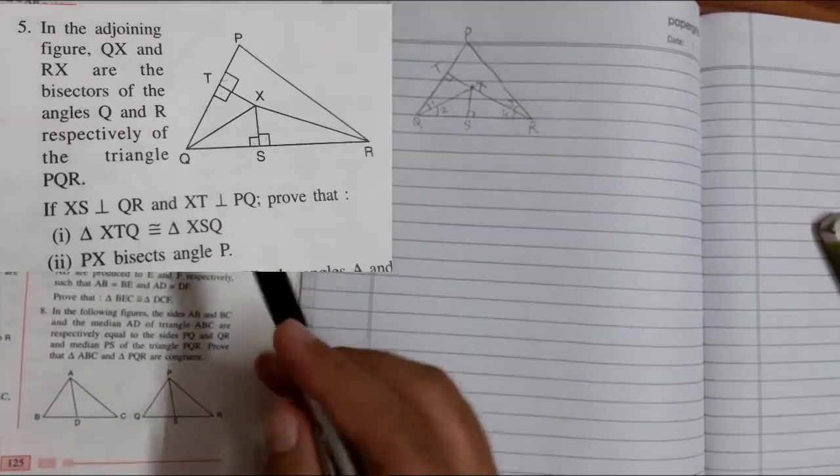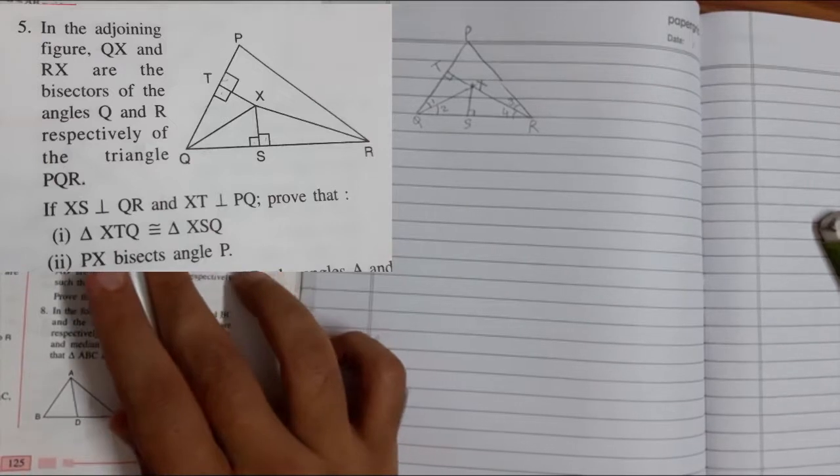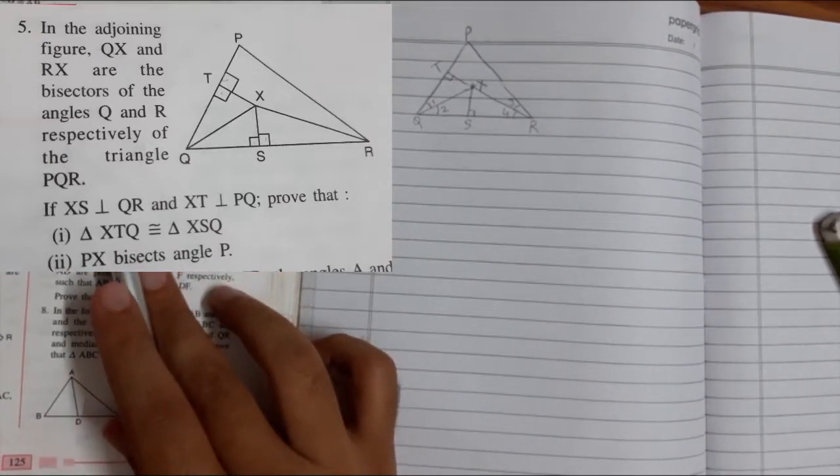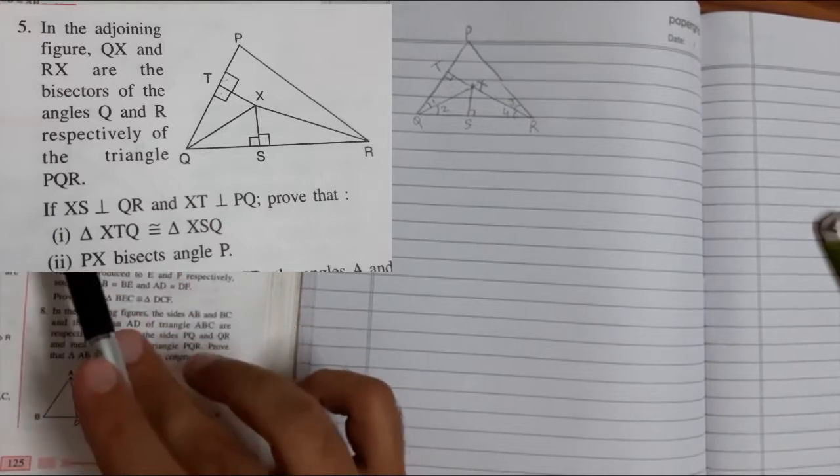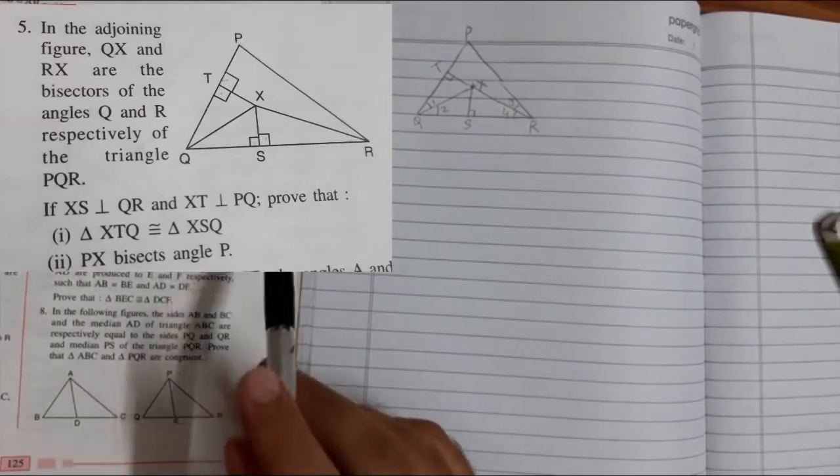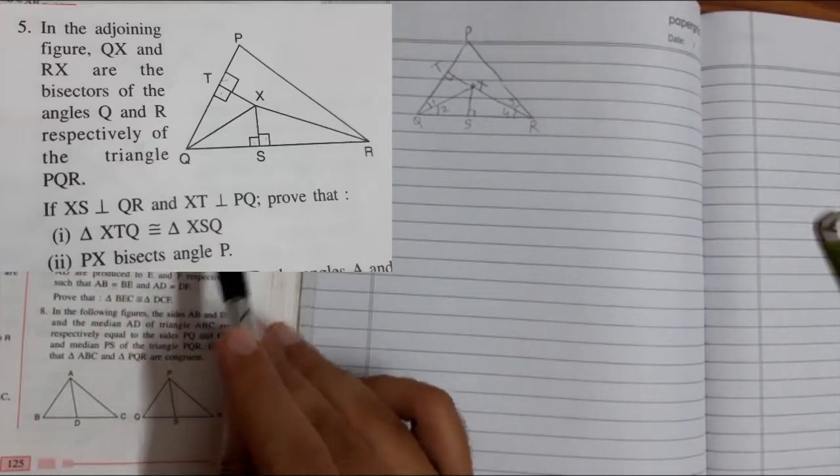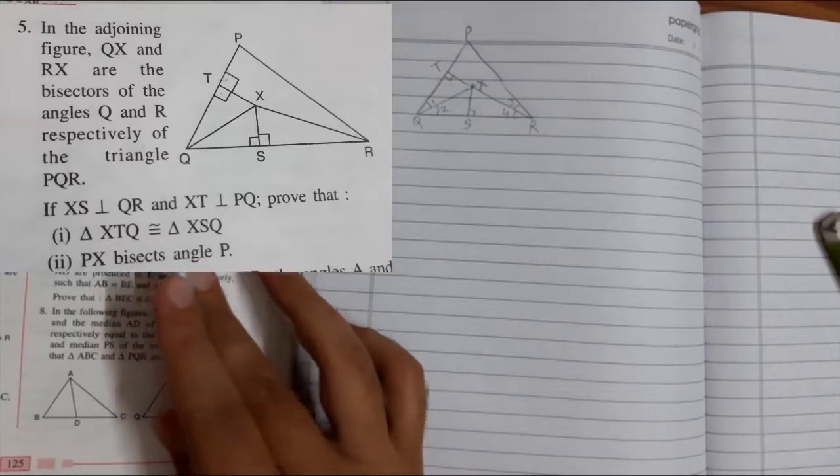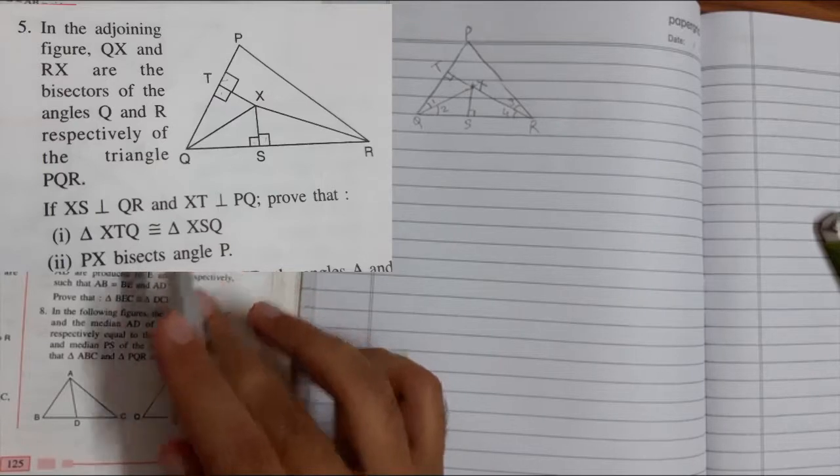In this video we are going to solve question number 5. In the adjoining figure, QX and RX are the bisectors of angles Q and R. It is quite a possibility that they might not give you the figure, so you have to think like this. They can say there is a triangle PQR.